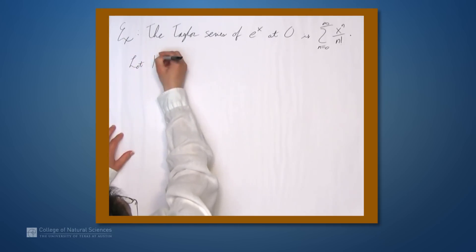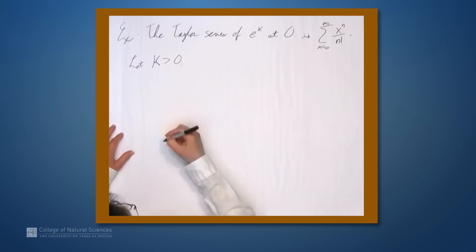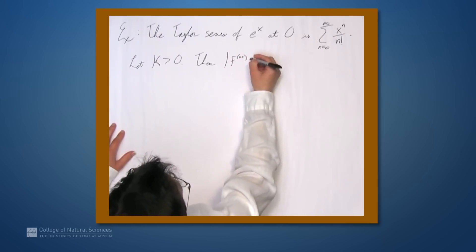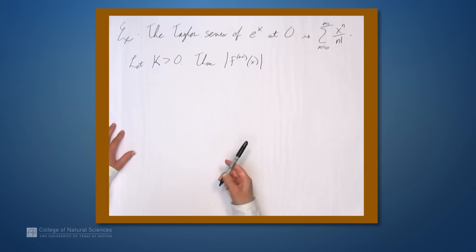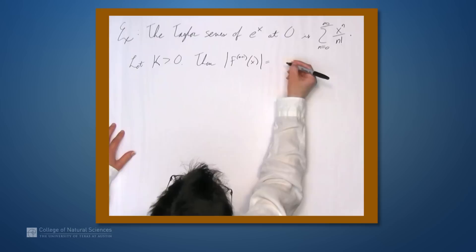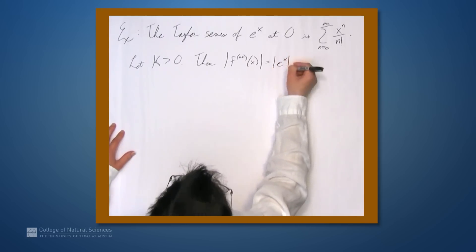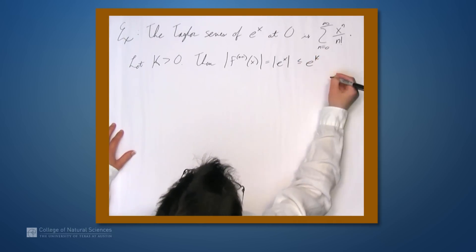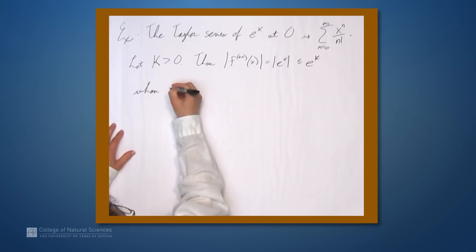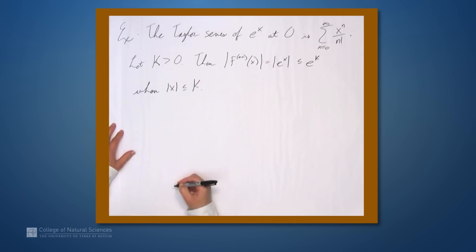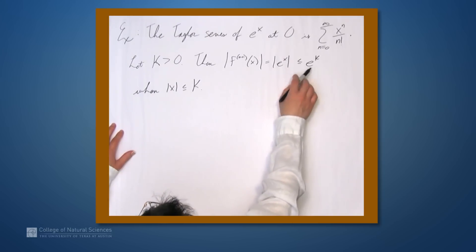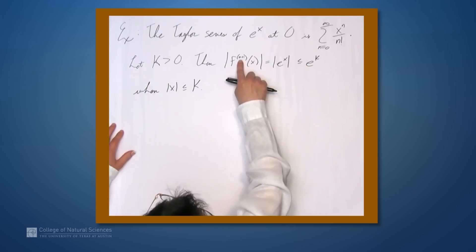Let k be any number greater than 0. Let's take a look at the absolute value of the (n+1)th derivative. The (n+1)th derivative of e to the x is just e to the x, so this is the absolute value of e to the x, which equals e to the x. This is certainly less than or equal to e to the k when the absolute value of x is less than or equal to k. So e to the k plays the role of m in Taylor's inequality. Notice that this doesn't depend on n — e to the k is an upper bound for every value of n.